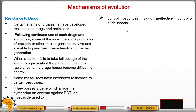This makes DDT ineffective in control of such insects. An enzyme is a biological chemical which helps to speed up or reduce the rate of enzymatic activity, and these enzymes help the insects become resistant against DDT.